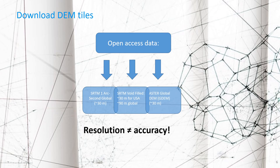It is not the case that higher resolution means higher accuracy — it is a different concept. You can have a very high spatial resolution, but even the error per pixel can also be very high. And it's also not the case that you always need the highest resolution for each purpose. For catchment modeling, generally the SRTM one arc second global product is fine.